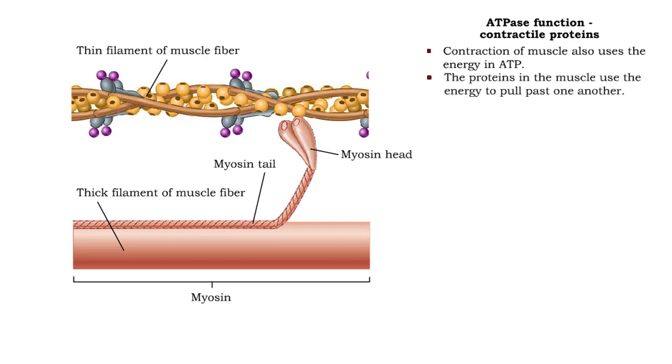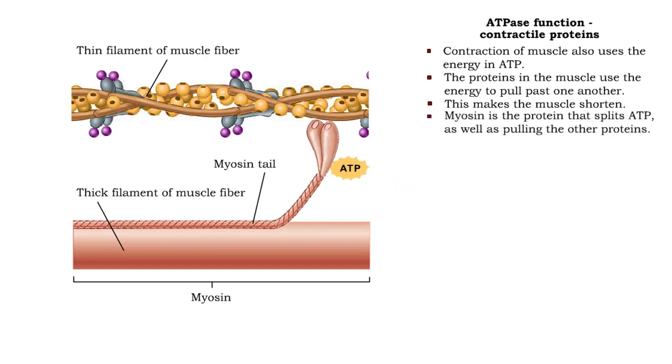Proteins in the muscle pull past one another. The energy for their movement comes from ATP. As they move past one another, the muscle shortens.